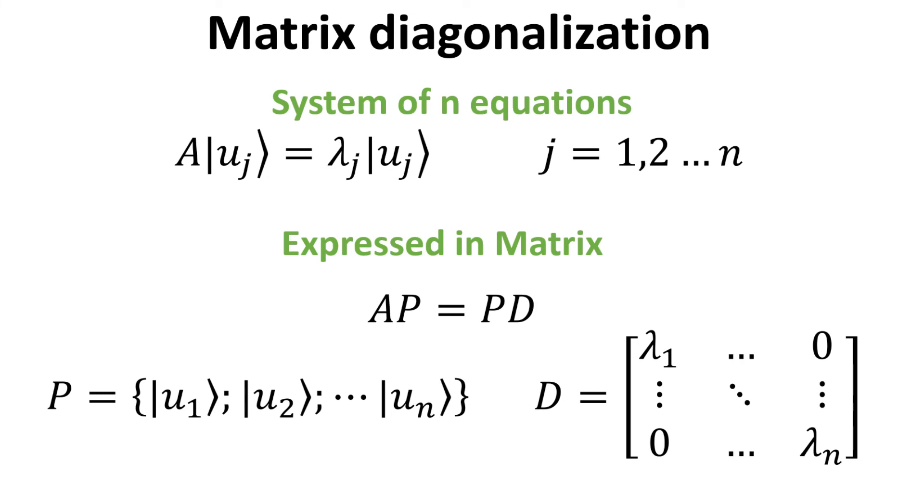P is an n by n matrix consisting of concatenating the columns with eigenvectors U1, U2, and so on up to U_n. D is an n by n diagonal matrix where the diagonal elements are the respective eigenvalues lambda 1, lambda 2, and so on up to lambda N.